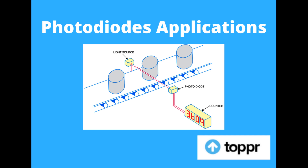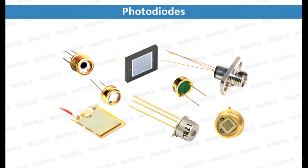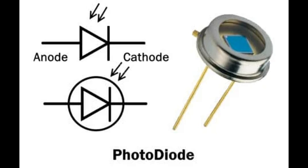Scientific instruments: Spectrophotometers measure the intensity of light at different wavelengths to analyze the spectral properties of samples in chemical and biological research. Radiometers measure the intensity of radiant energy, used in astronomy and environmental science. Light meters measure the intensity of light in various environments, used in photography, cinematography, and plant research.